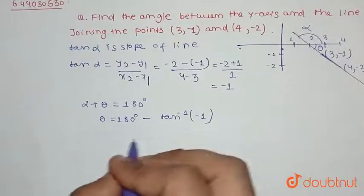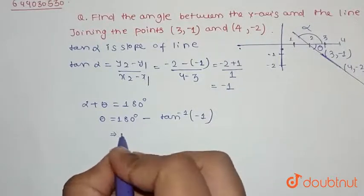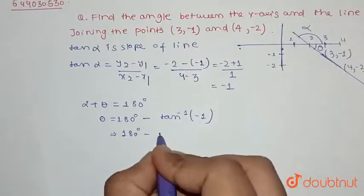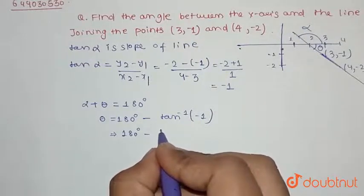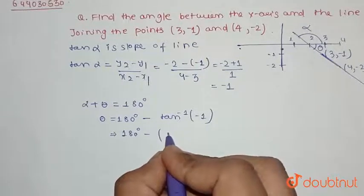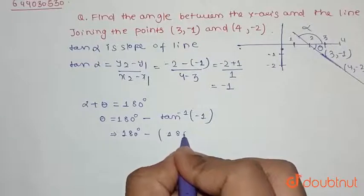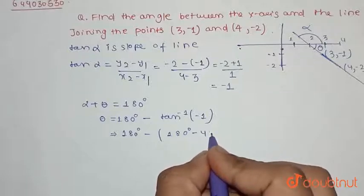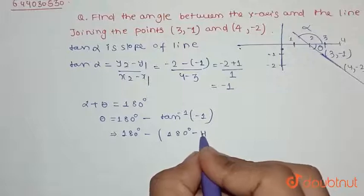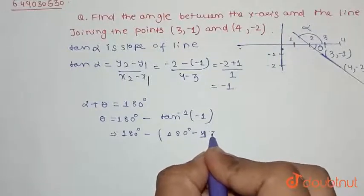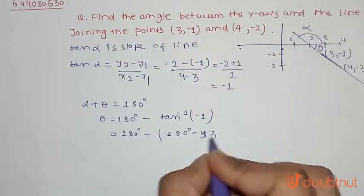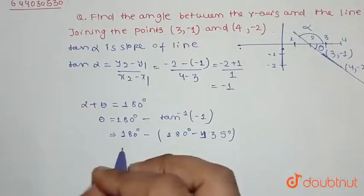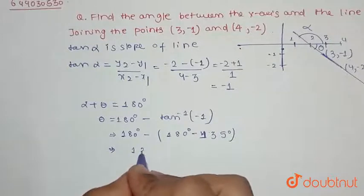That is tan inverse of -1. So theta equals 180 minus tan inverse (-1), which equals 180 minus (-45), giving us 135 degrees. So our answer is 135 degrees.